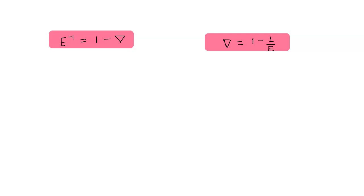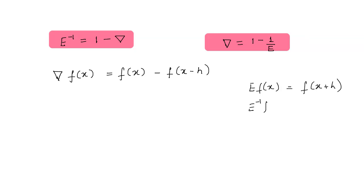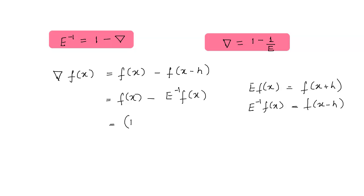Our next property is E inverse equals 1 minus nabla. The backward difference operator is defined as nabla f(x) = f(x) - f(x - h). We have seen that E inverse f(x) = f(x - h). So f(x) - f(x - h) becomes f(x) - E inverse f(x), and taking f(x) outside gives (1 - E inverse) f(x). This proves that nabla equals 1 minus E inverse.